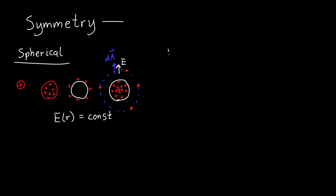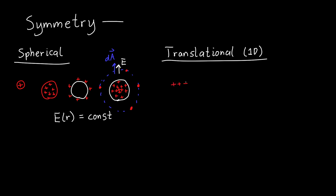The second kind is 1D translational symmetry. Examples include infinite lines of charge, infinite cylinders of charge — whether uniformly or non-uniformly distributed — and cylindrical shells. As long as these extend to infinity in length, we can use Gauss's law for them.